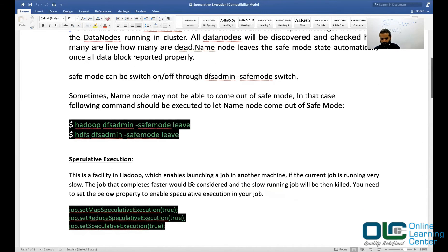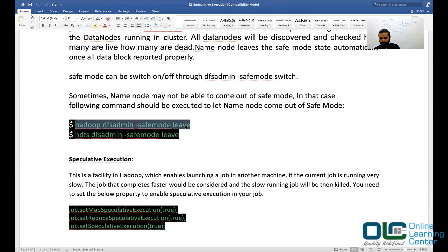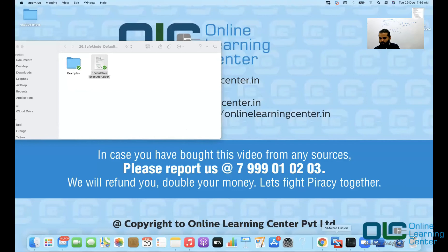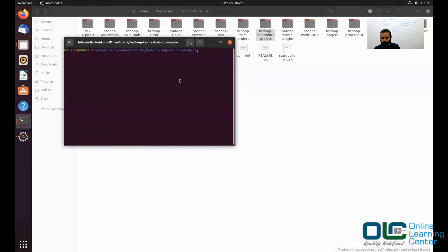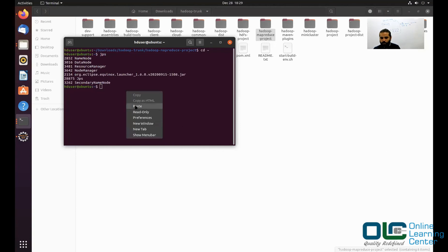So all you need to do is copy this and go to your cluster and paste Hadoop DFS admin safe mode leave when you are getting that problem. So let me say JPS, I have all my services up and running. So if I say paste, it's saying safe mode is off.